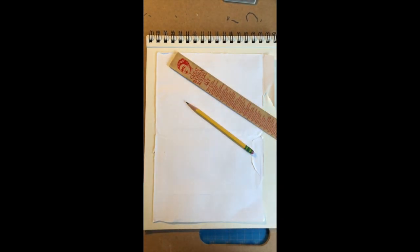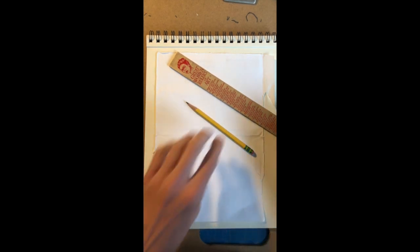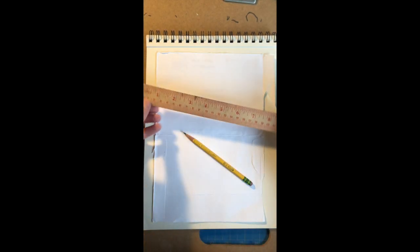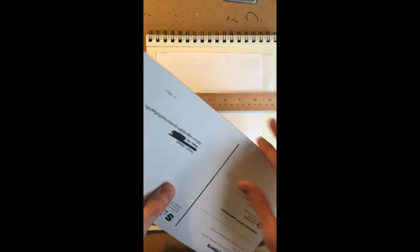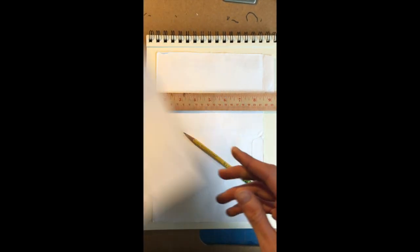First you'll need a pencil, a straight edge, and any kind of drawing surface. And if you don't have a straight edge you can find any rigid material. I have some mail here from the SAM so I can use the edge of this card stock.